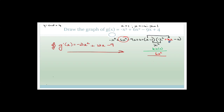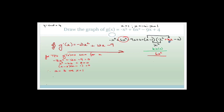Now we let g'(x) equal zero and factorize. So for the turning points, we let g'(x) = 0 and solve for x. So: -3x² + 12x - 9 = 0. Dividing everything by -3, we get x² - 4x + 3 = 0. Factorizing: the only factors of 3 are 3 and 1, both signs have to be negative. So we get x = 3 or x = 1.